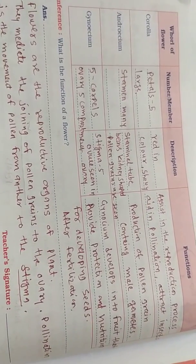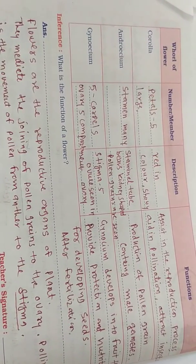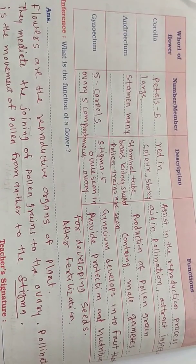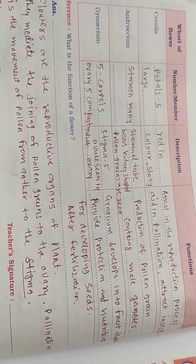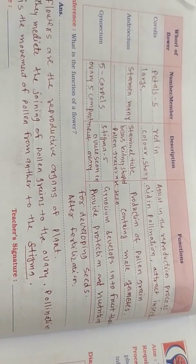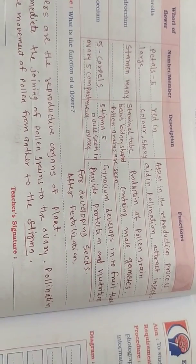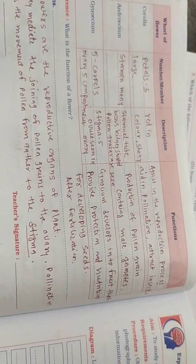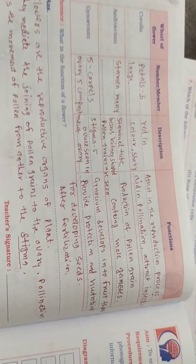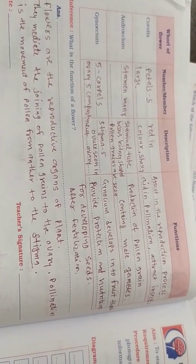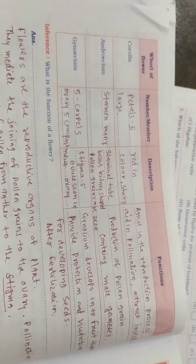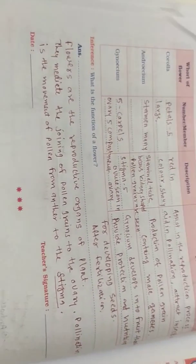The gynoecium consists of stigma, style, and ovary. The function of the gynoecium is to develop into fruit. It provides protection and nutrition for developing seeds after fertilization. The gynoecium is the female part of the flower.